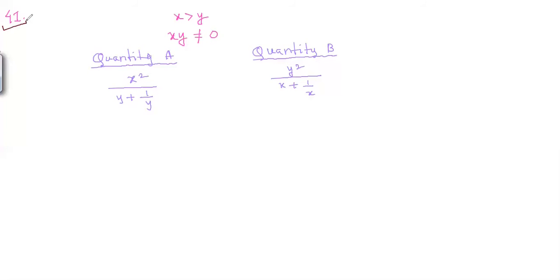Now in question 41, we have two conditions: x is greater than y, and x and y are not equal to 0 — meaning neither variable can be zero. In quantity A and quantity B, we have algebraic expressions. For this type of question, it is better to choose test values for the variables and evaluate both quantities.